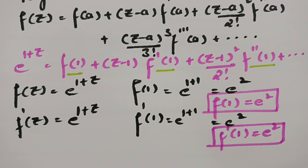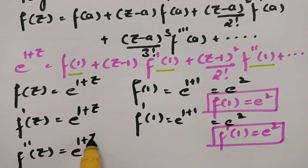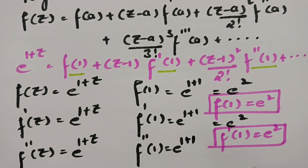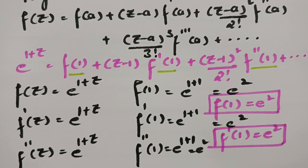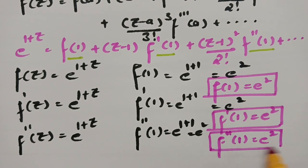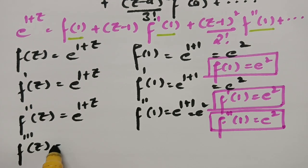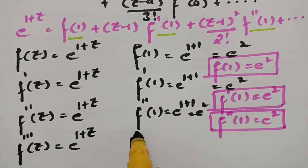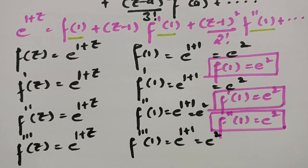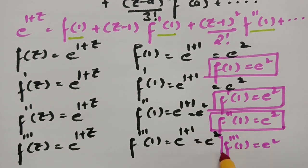For f double dash, we take the derivative again with respect to z. This gives e power 1 plus z, so f double dash of 1 is e power 1 plus 1, which is e square. For the third derivative, again e power z is e power z, so in place of z keeping 1, this is e power 1 plus 1, which is e square. So f triple dash of 1 is also e square.